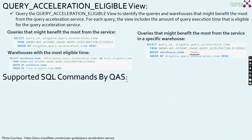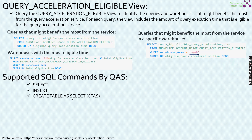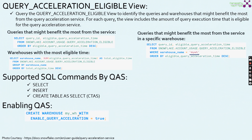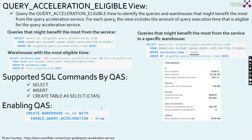The supported SQL commands for QAS are SELECT, INSERT, and CTAS (Create Table As Select). To enable query acceleration, you can use CREATE WAREHOUSE or ALTER WAREHOUSE and set ENABLE_QUERY_ACCELERATION = TRUE on an already running warehouse. This is how we enable query acceleration at the warehouse level.